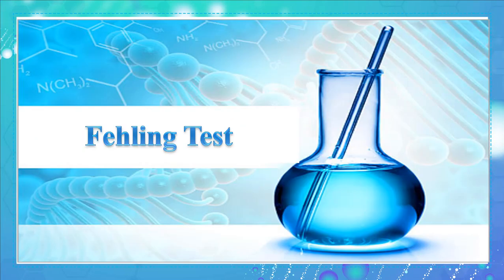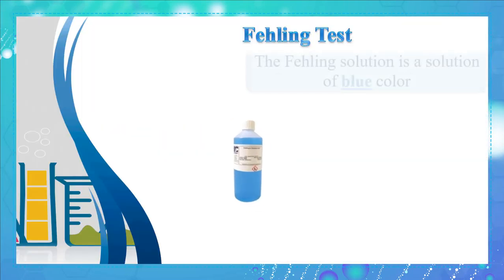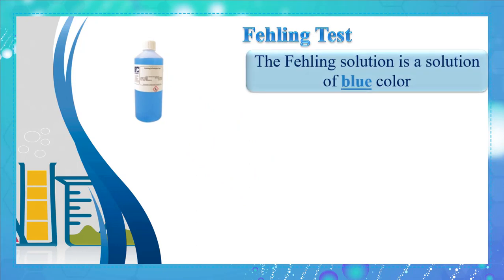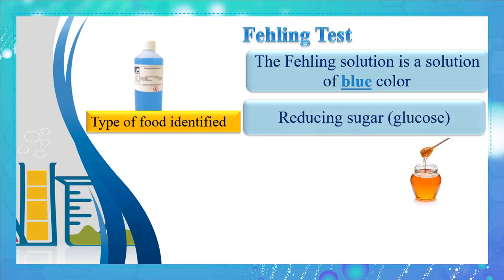Let's proceed with the Fehling test. The Fehling solution is blue in color and is composed of two solutions: Fehling A and Fehling B. The type of food identified is reducing sugar, like glucose.